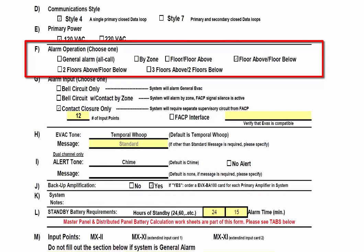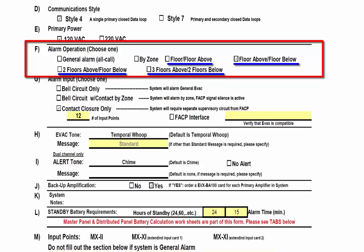Alarm operation defines how the system should operate in an alarm condition. General alarm means that all speaker circuits or zones will activate simultaneously. By zone selection indicates that the fire alarm panel will provide contact closures to the control specifying which speaker circuit should activate. The remaining options are selected when speaker circuits of specific floors should activate. For example, floor above and floor below means that the floor where the alarm occurred, the floor above, and the floor below are the only floors that should sound the evacuation message. Only one mode of alarm operation should be selected.